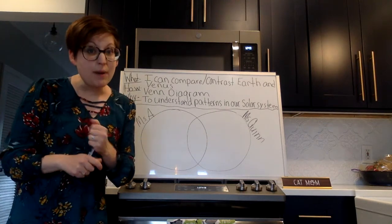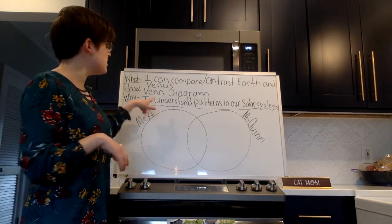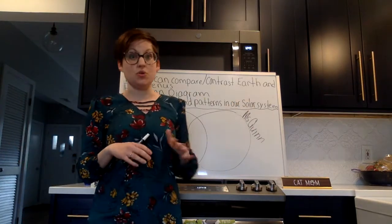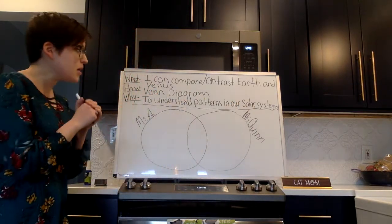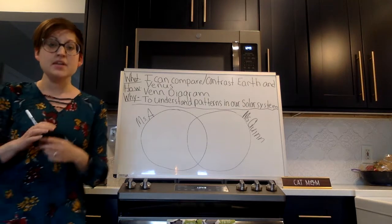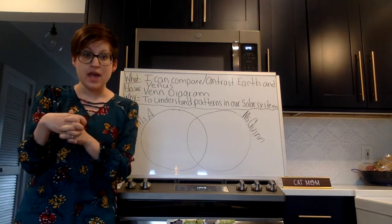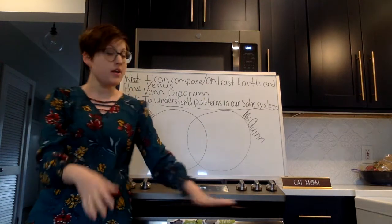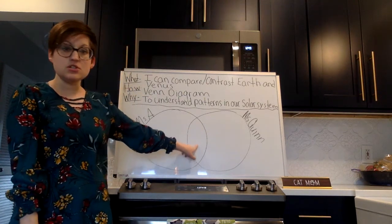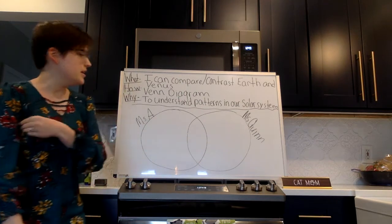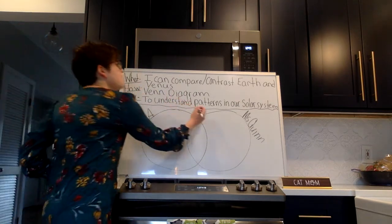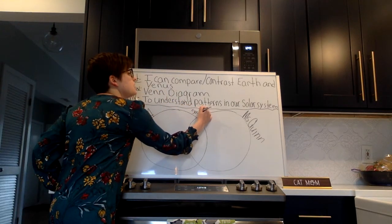When it comes to using a Venn diagram, it's basically two circles that overlap in the middle. When I say compare, I'm talking about the center section right here. This area is what you'll be marking as things that are the same or similar about Earth and Venus.